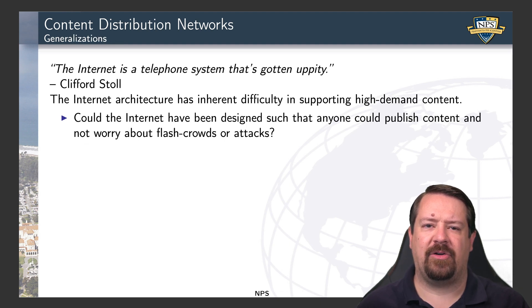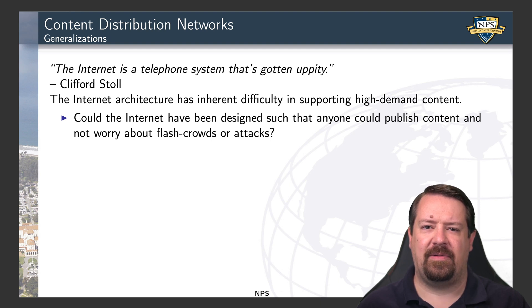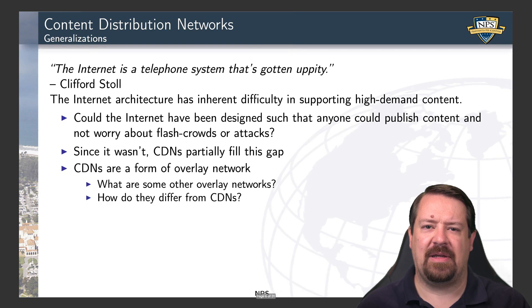The internet architecture wasn't designed with these sorts of behaviors in mind, and so it has some level of difficulty in supporting high demand content, mainly in the respect that it has to get the traffic from one place to another, and those may be a significant distance apart. So the internet could have been designed differently with respect to this particular application, but it just wasn't envisioned at the time. So CDNs are a stopgap measure to fill this need.